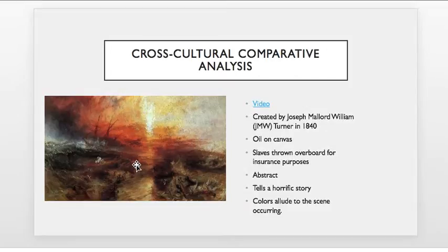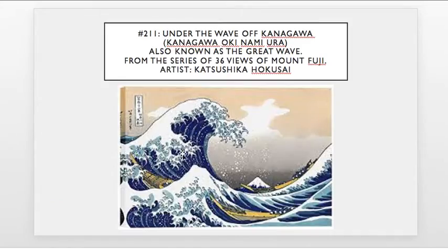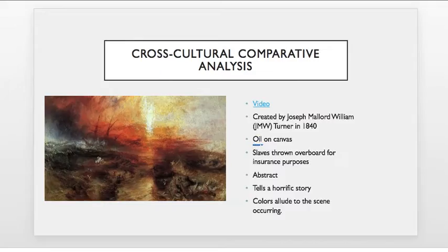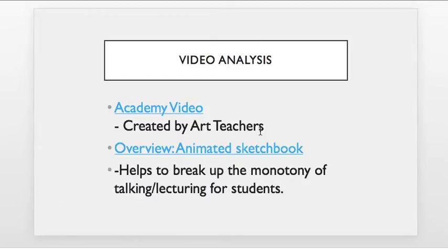The coloring in the Slave Ship — a lot of fire, a lot of anger — is comparative to The Great Wave because it alludes to something horrific: slaves being thrown overboard for insurance. Similarly, The Great Wave's colors are calming but also very suspenseful. That was a good comparative analysis. I also like to use video analysis, either at the beginning or end of the lesson, from the Khan Academy website or the Smart Art History website. The first video was one that another art teacher and I created that mocks a Khan Academy style.